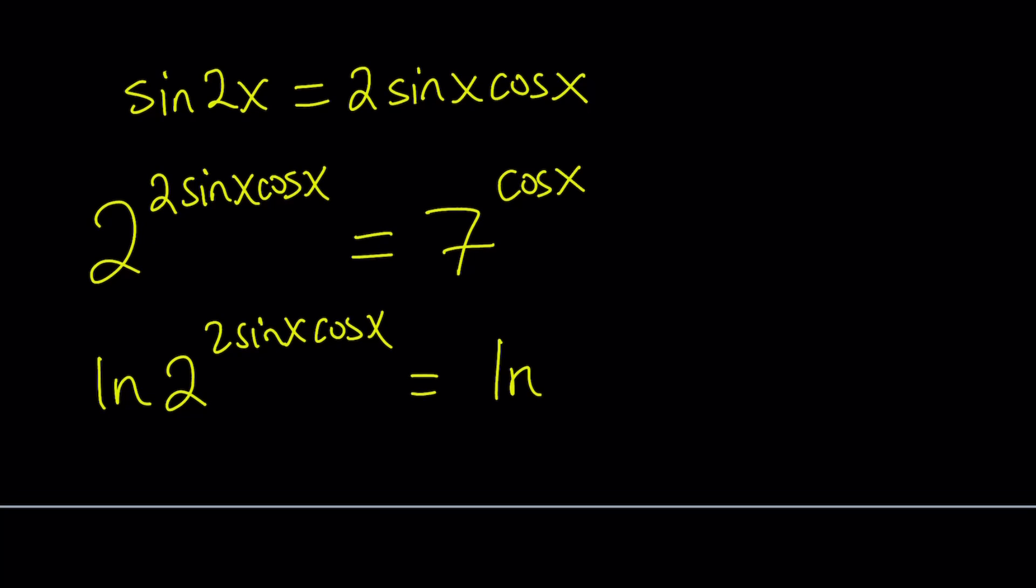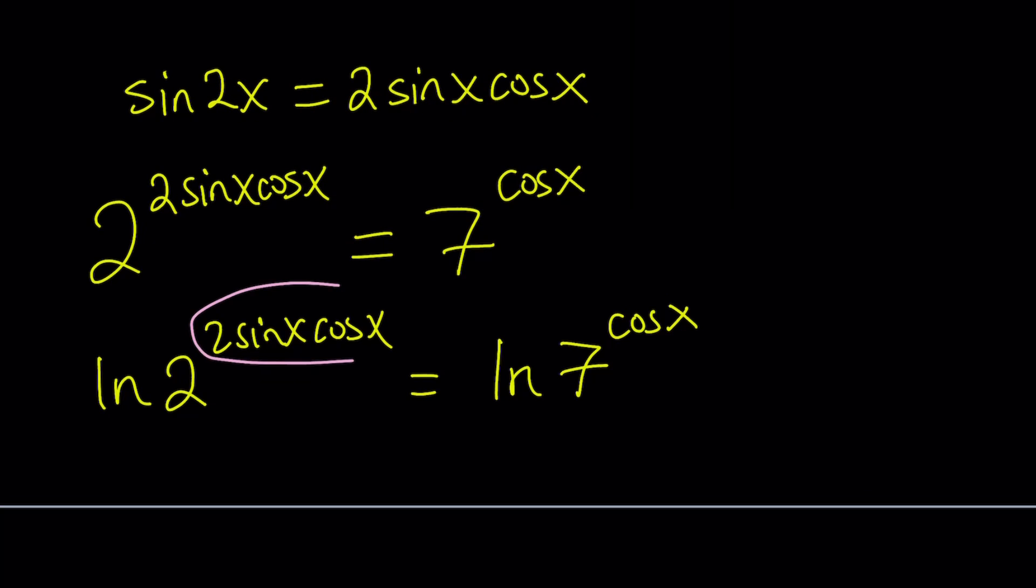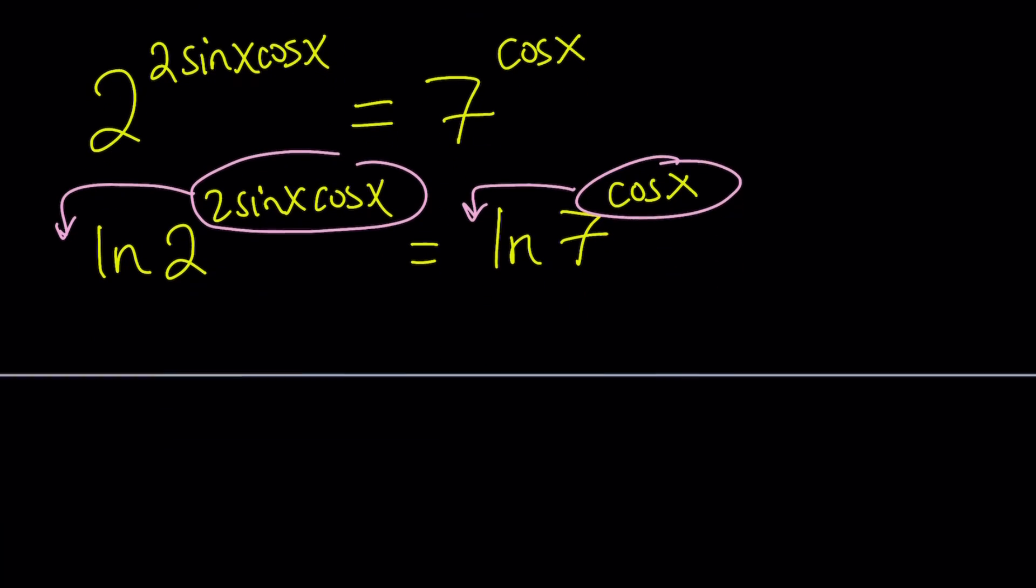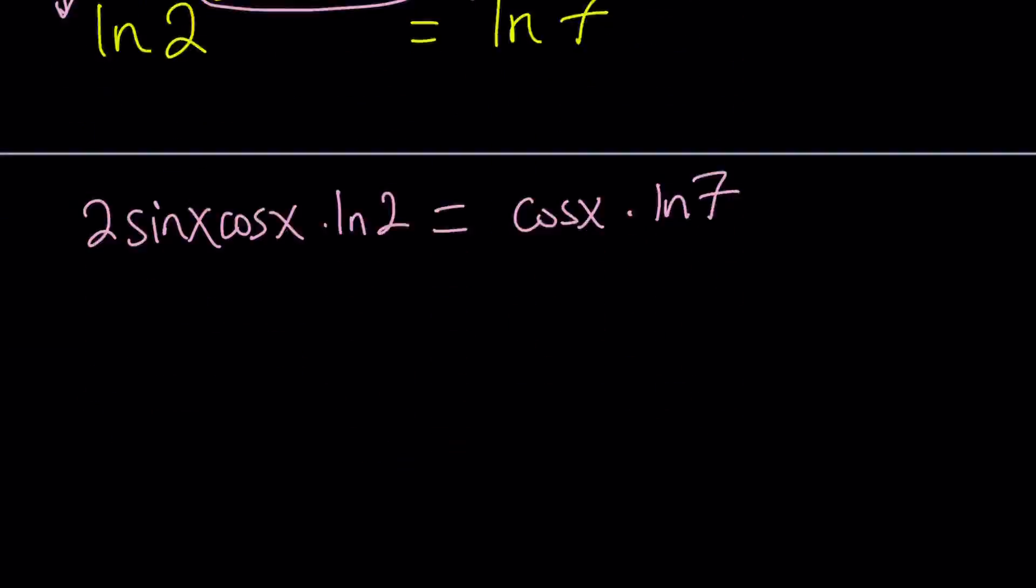Natural log is ln. Properties of log tell us we can move these exponents to the front. That's actually why we're logging. So this gives us 2 sine x cosine x times ln 2 equals cosine x times ln 7. Awesome.